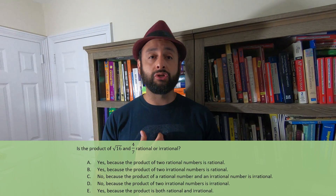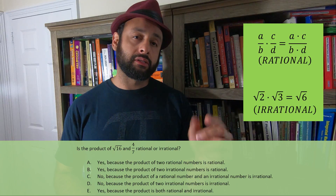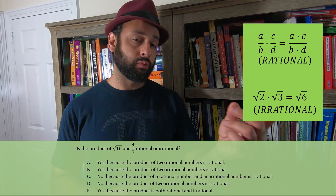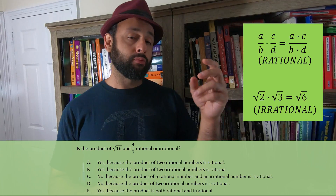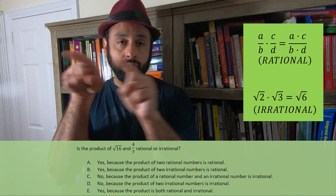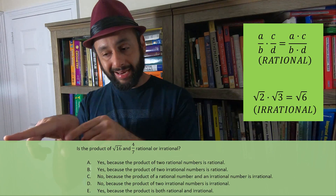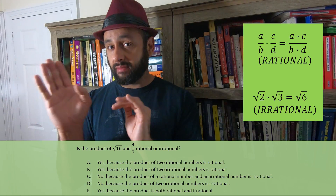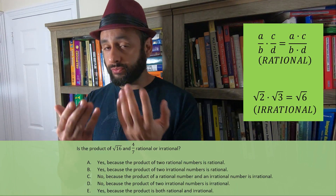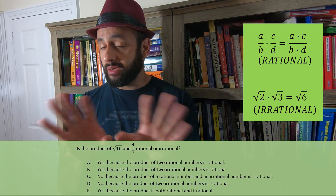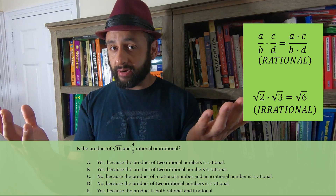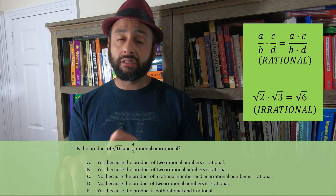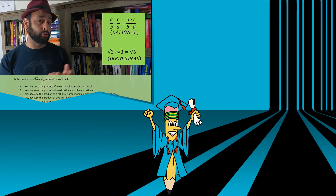They see 16 over 7 and still say irrational. That's why you have to know the definitions better. Neither radical 16, which is 4, nor 4/7 is irrational. When you multiply two fractions, you multiply the numerators and multiply the denominators — and you get a fraction back. So the product of two rational numbers is rational.